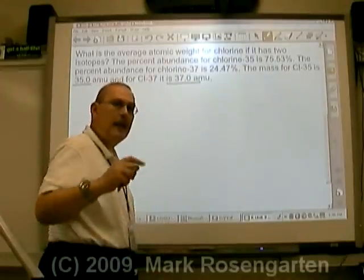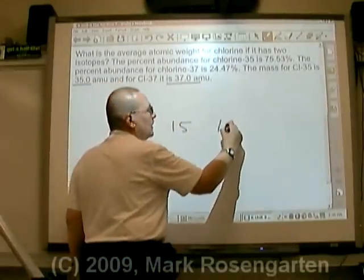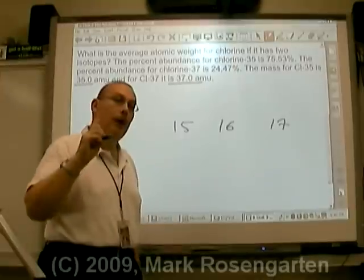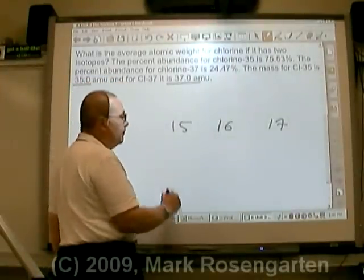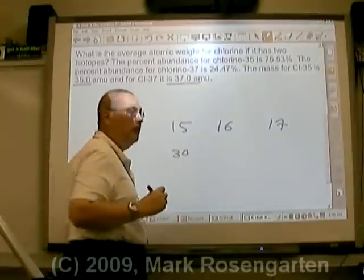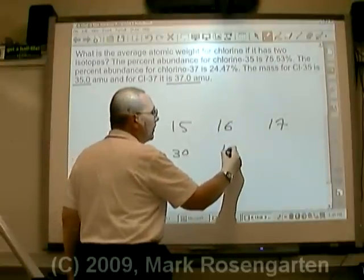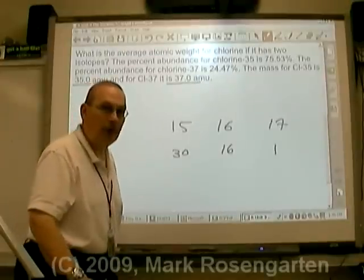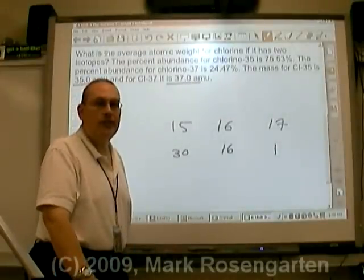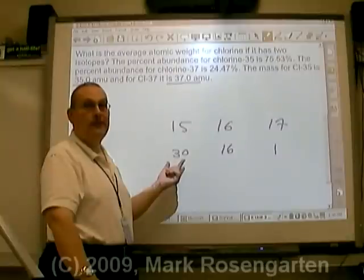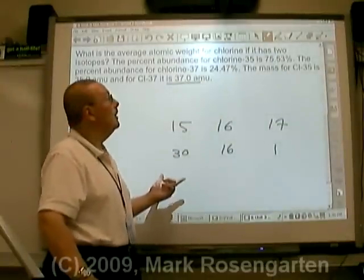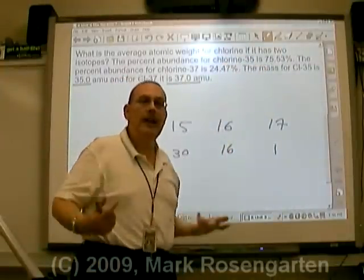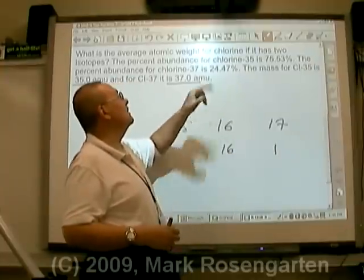Let's say you're going to go to a birthday party. At that birthday party, you're going to have 15-year-olds, 16-year-olds, and 17-year-olds. You might say the average age is 16, but what if out of all the people, 30 of the people are 15, 16 of the people are 16, and there's only one 17-year-old at the party? You're going to notice it's going to be a lot closer to 15 because there's a lot more people who are 15 at that party. Just the same, since the vast majority of chlorine has a mass of 35, your weighted average mass will be closer to 35 than it is to 37.